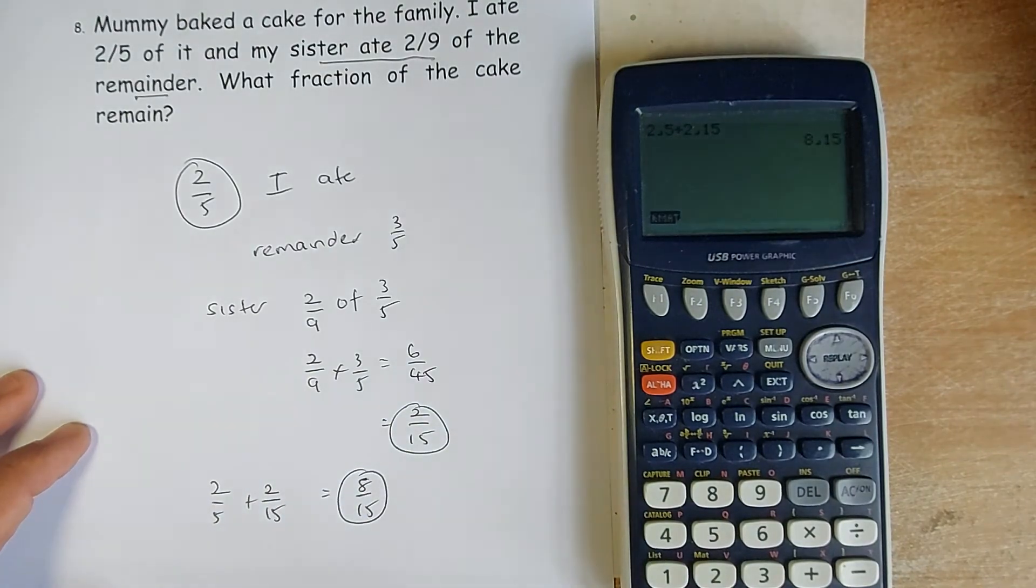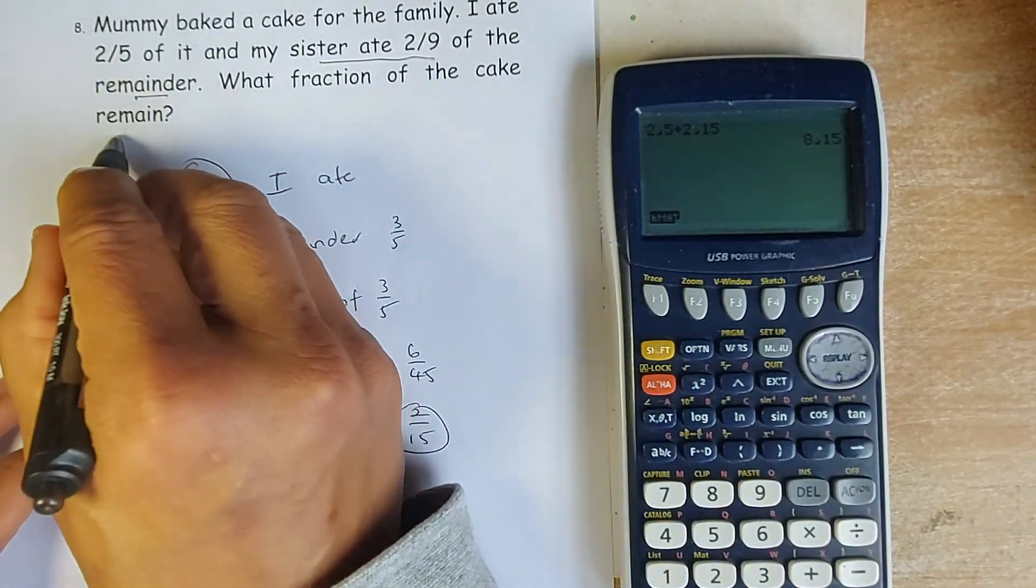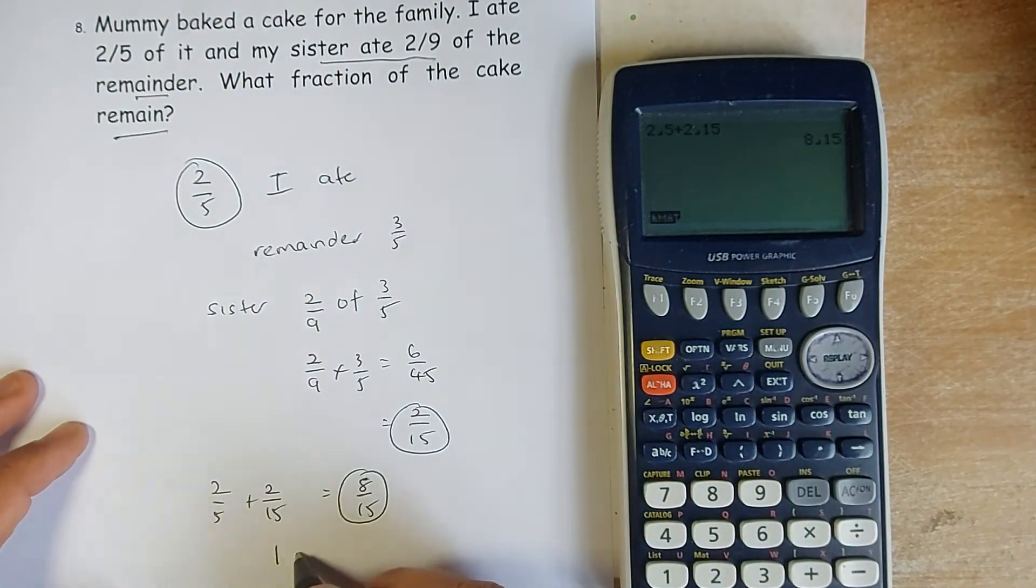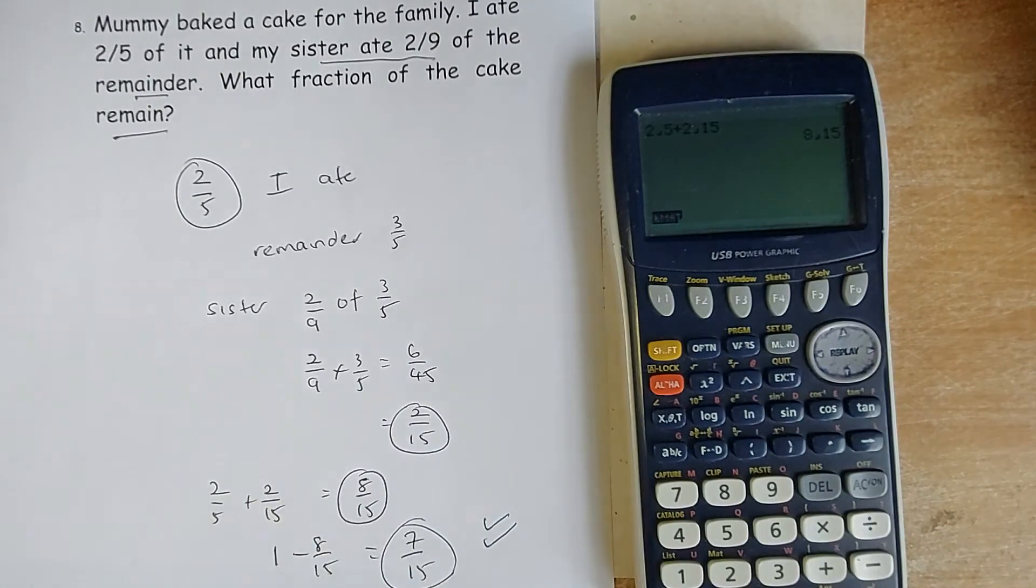So the question is what fraction of the cake remains. So 1 minus 8 over 15, so we are left with 7 over 15, and that will give you 2 marks. Keep practicing and before long you'll be an expert in fractions. Enjoy learning and keep studying hard.